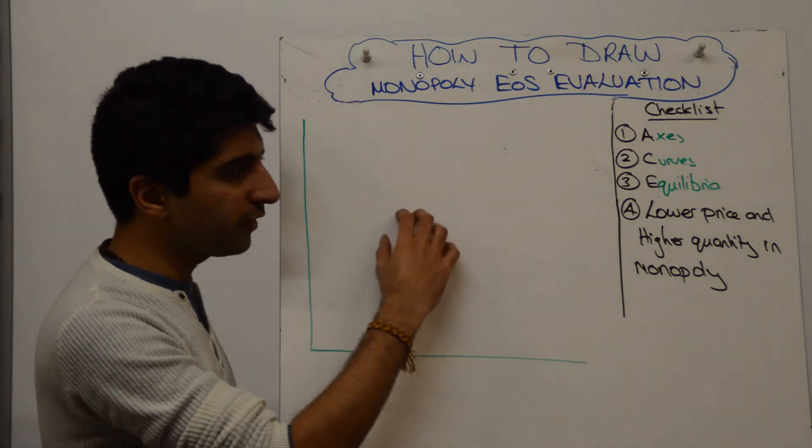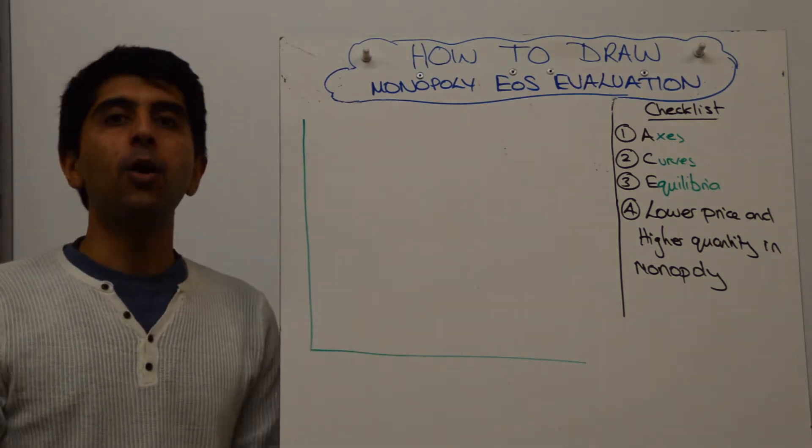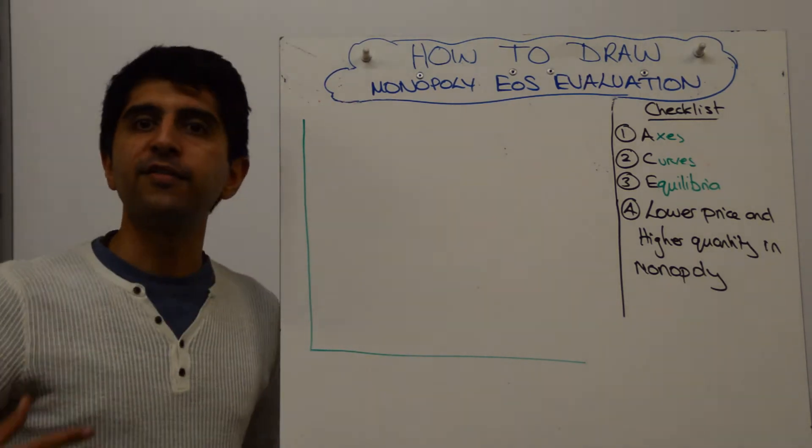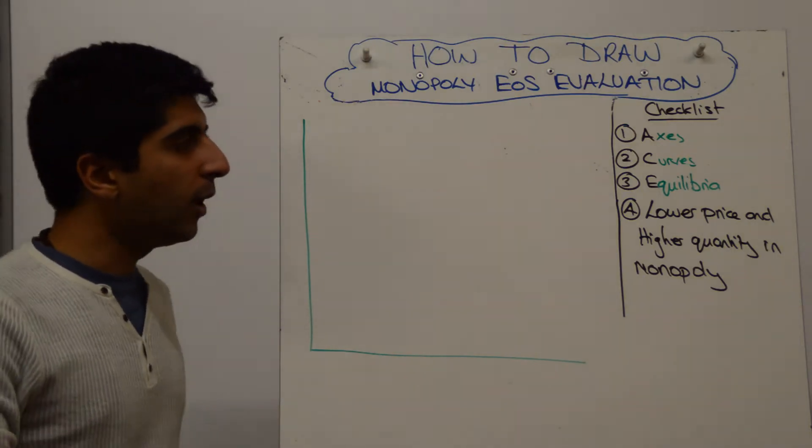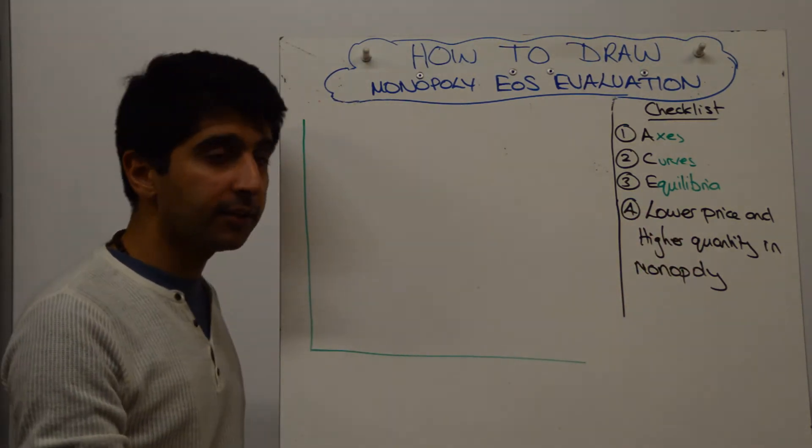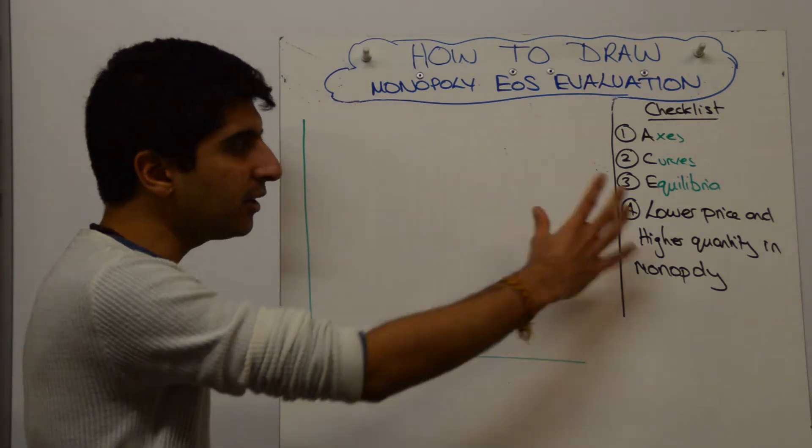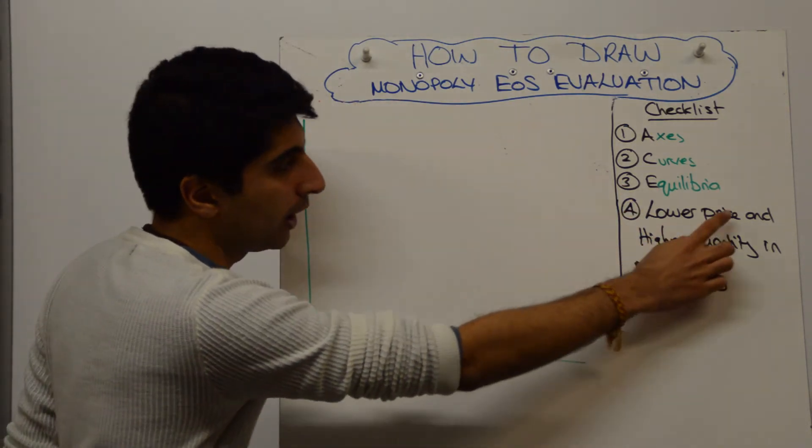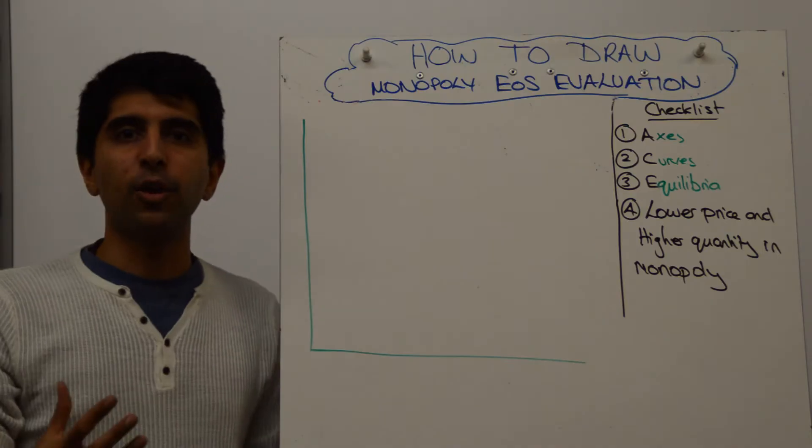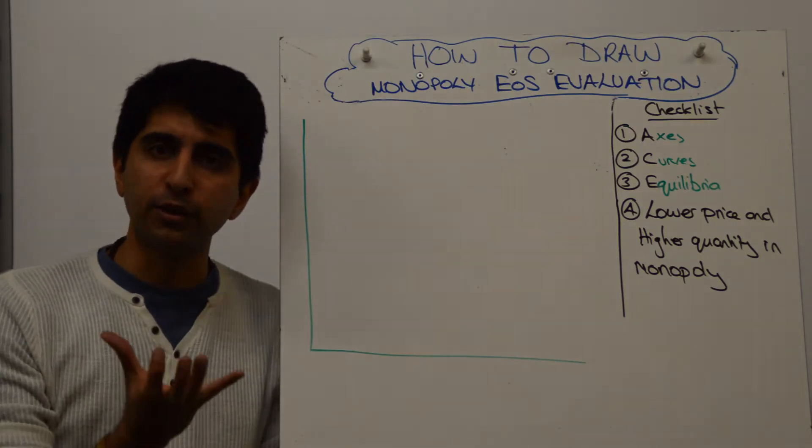In evaluation, if you can draw this diagram and understand the diagram, you can really be taken very far with your final score. What we're trying to get to is this, so this is in your checklist. In your mind, you're thinking, right, the end goal of this diagram is to show a lower price and a higher quantity in monopoly, reversing the outcomes we're used to talking about.